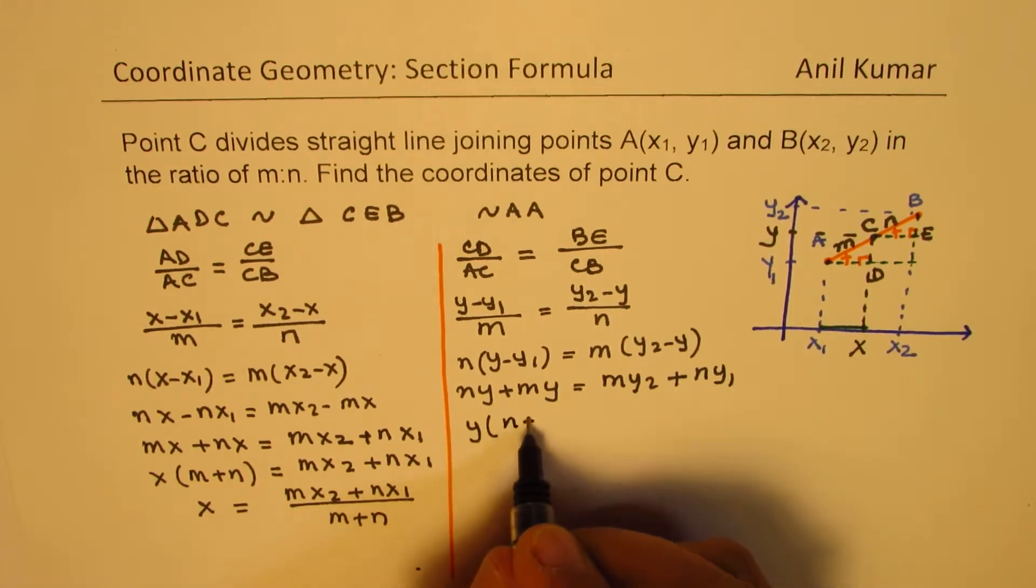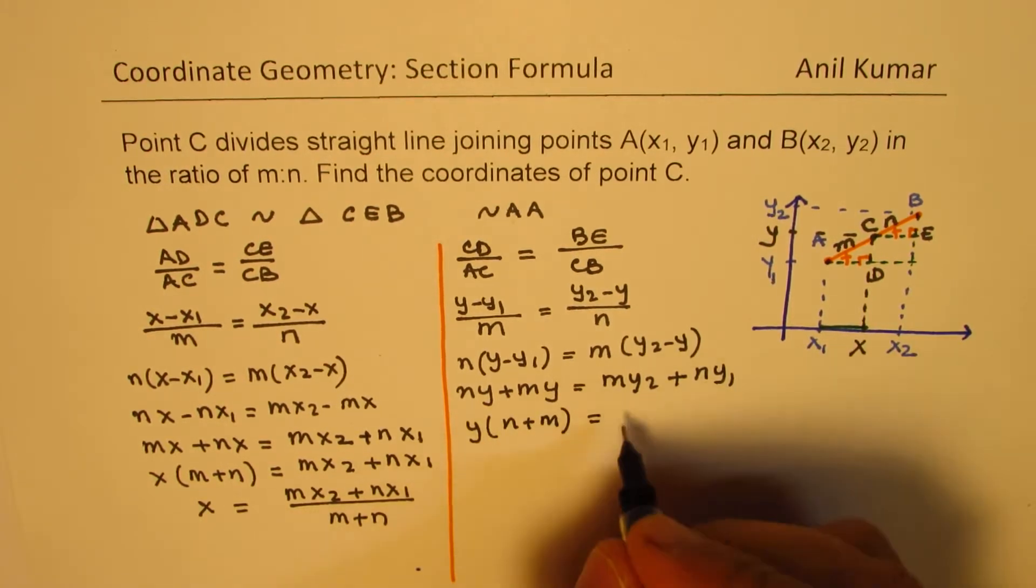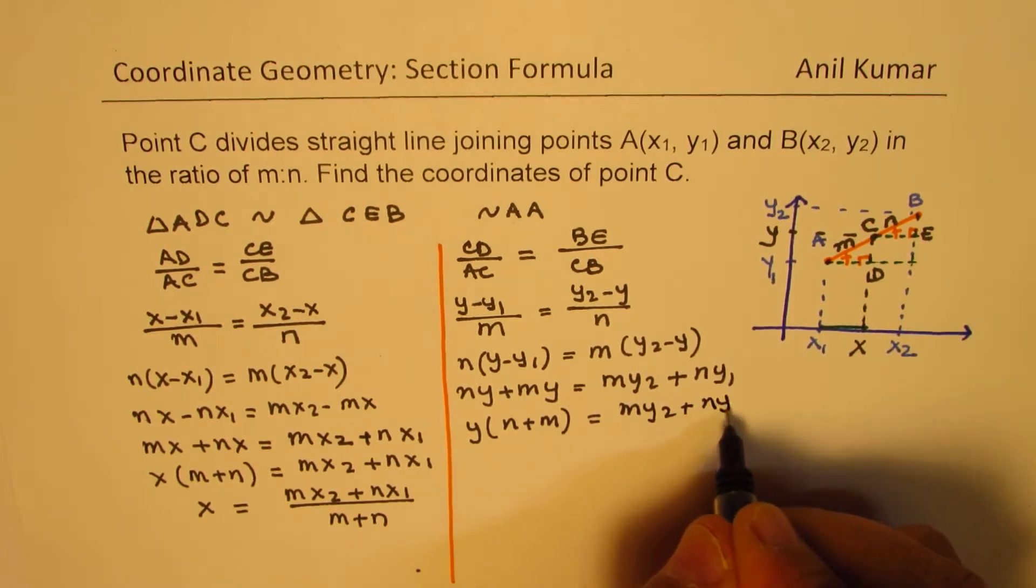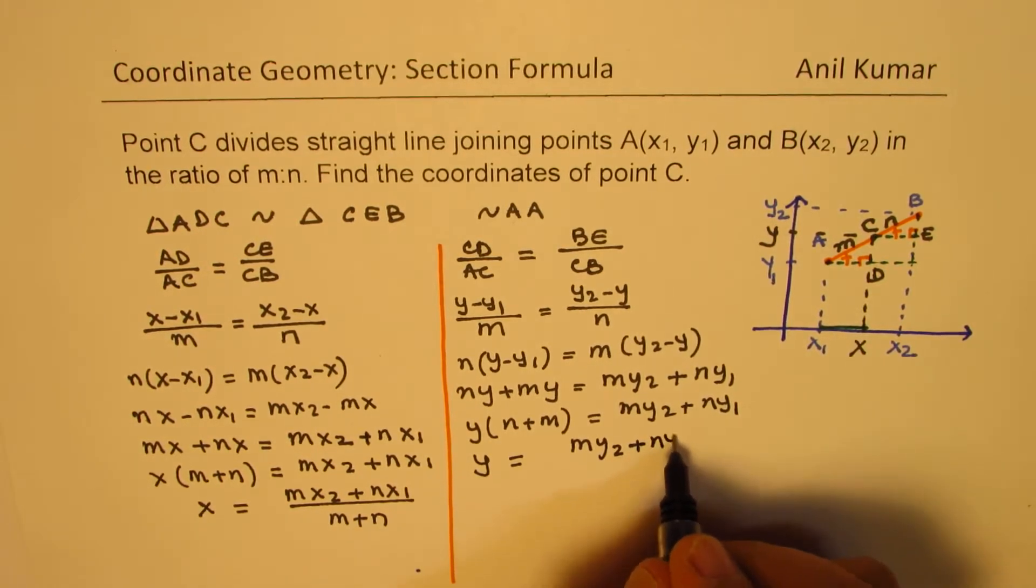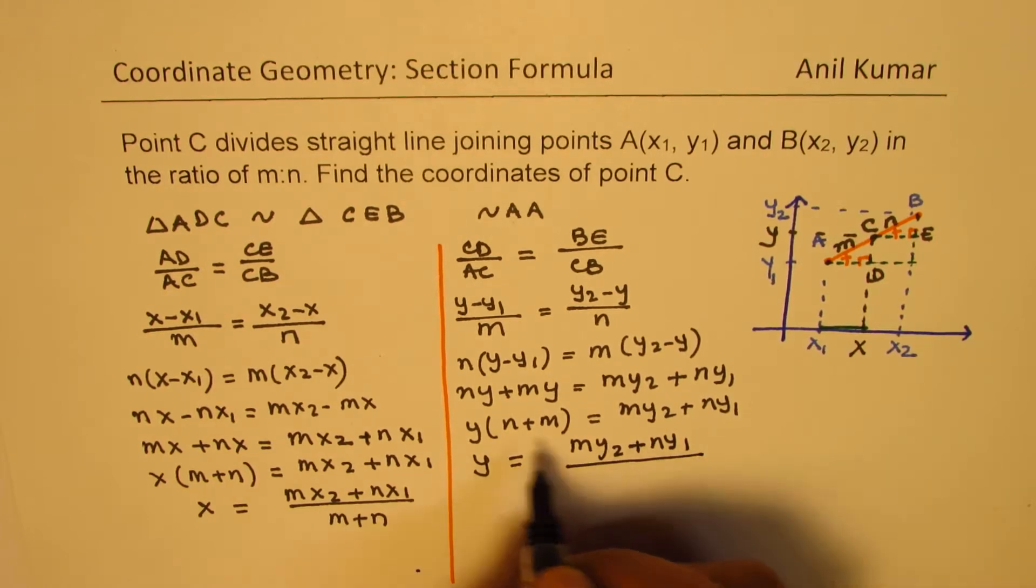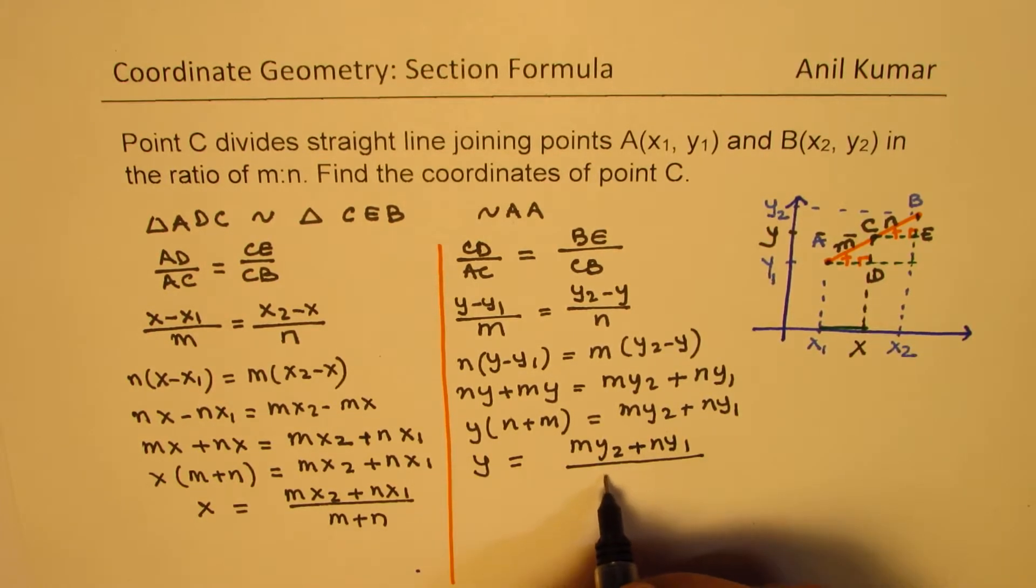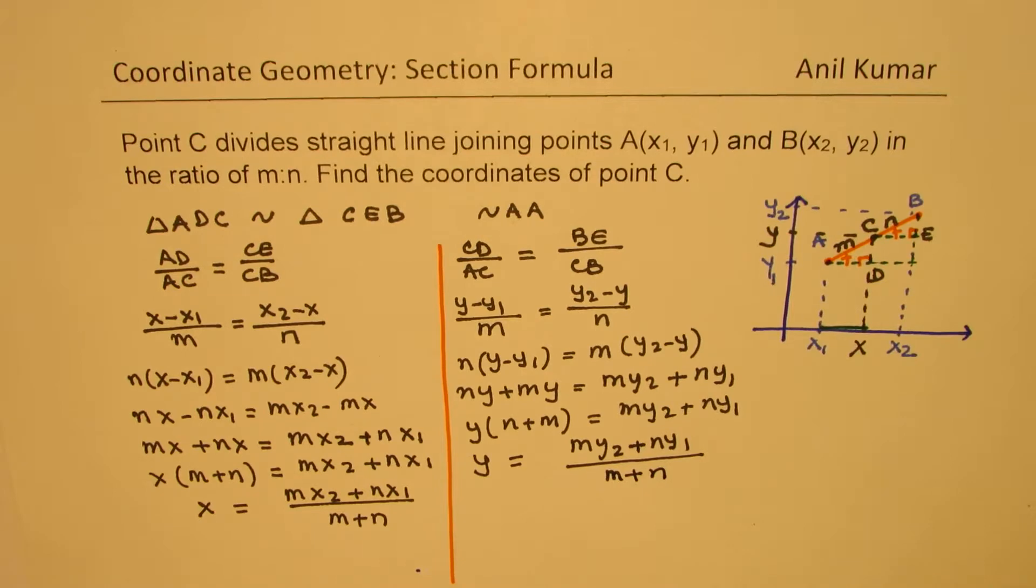Take y common, we get y(n plus m) equals to my2 plus ny1. Or the value of y is equal to (my2 plus ny1) over (n plus m), or we can write this as m plus n.